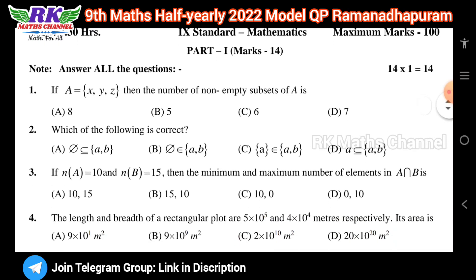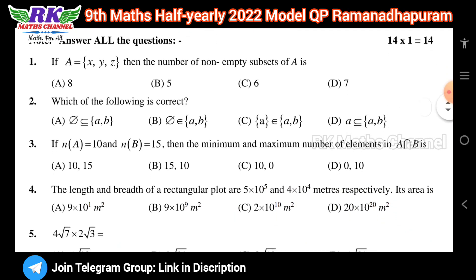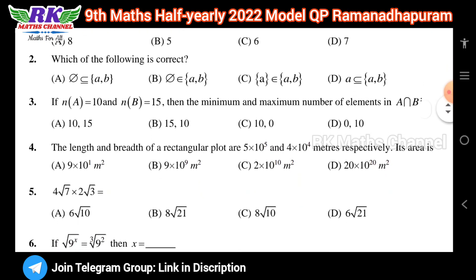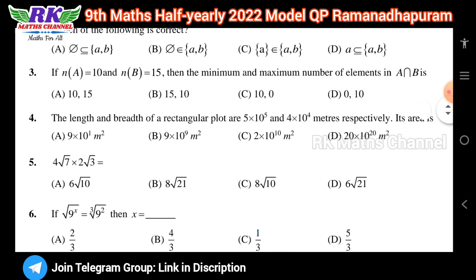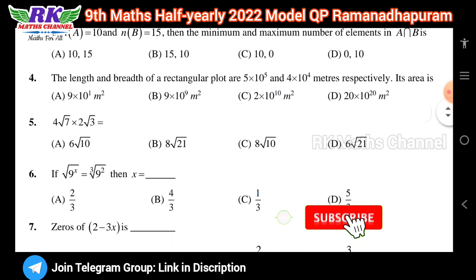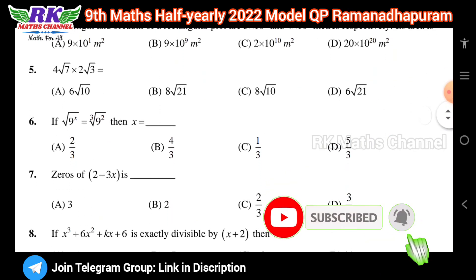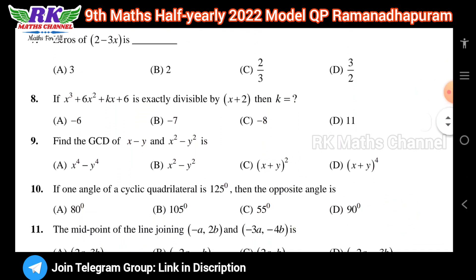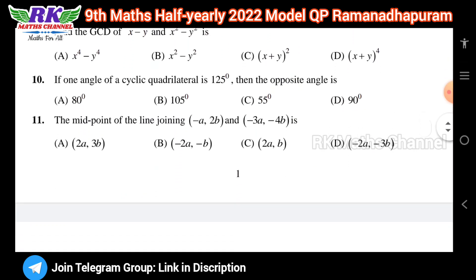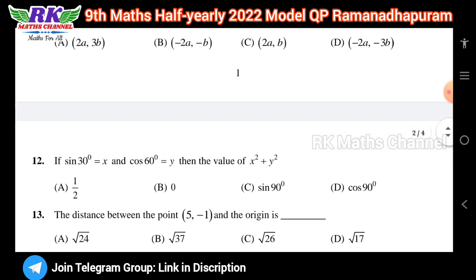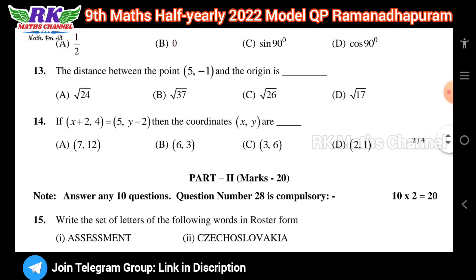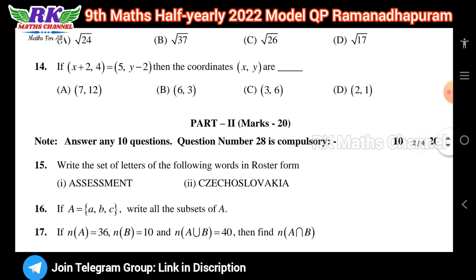So here is another question. Marks — first, there are 14 bits. As we told in our previous videos, all the bits are from the bookback. So from each unit's last exercise, practice all the bits. The exam will be easy, so practice all 14 marks bookback bits.